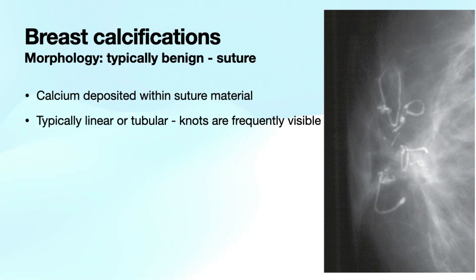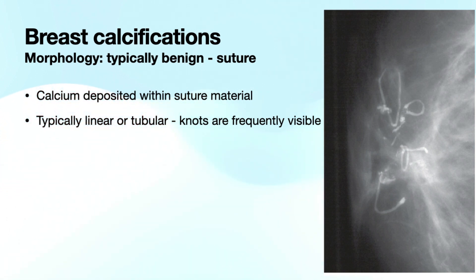We're going to talk now about suture or sutural calcifications — another typically benign and rather self-explanatory subgroup of calcifications. This is just calcium deposition within suture material, seen frequently in post-surgical patients. It's typically linear or tubular, and a lot of times the entire area of suture is calcified and you can see the entire knot, making this relatively easy to assess and diagnose.